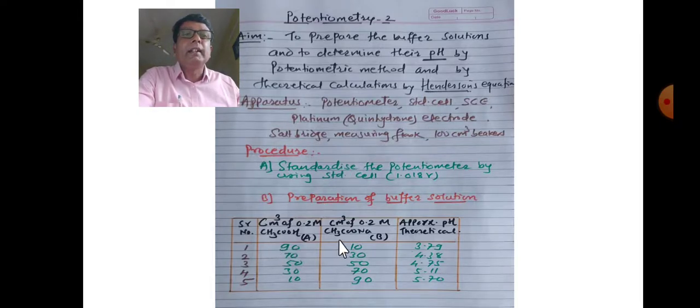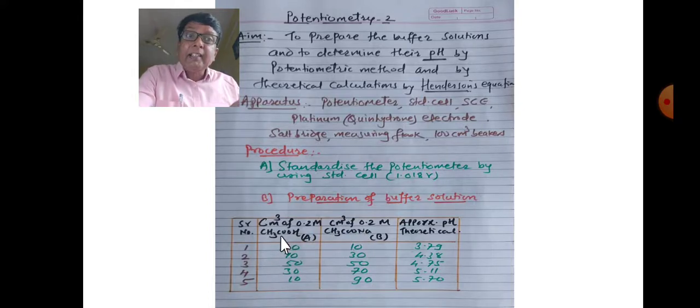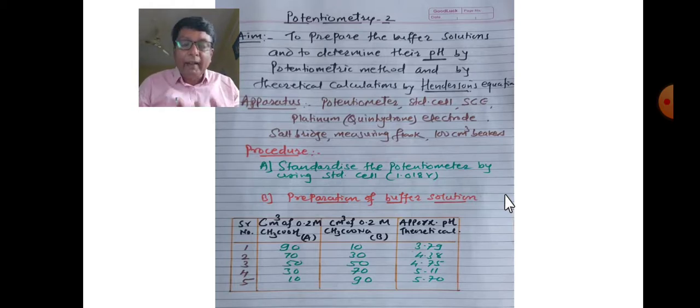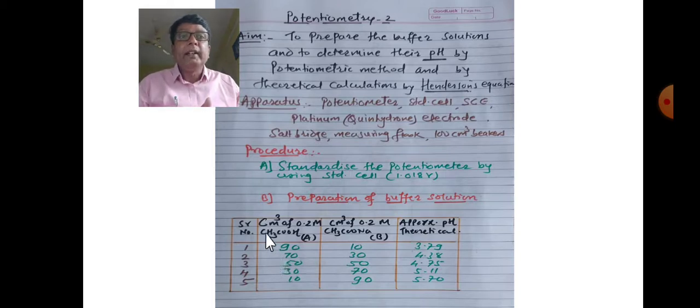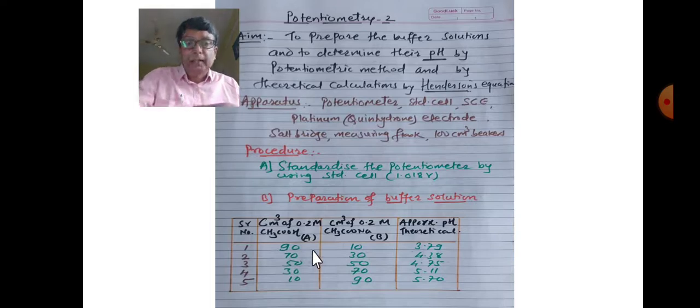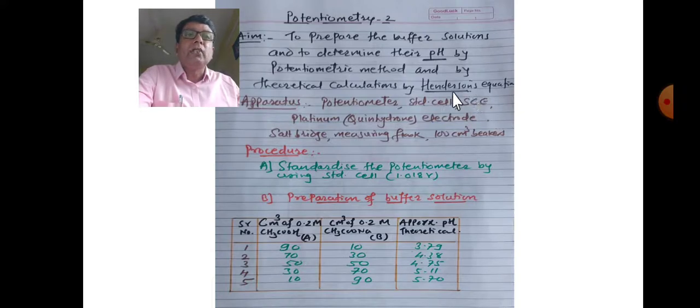Acidic buffer: weak acid CH3COOH and CH3COONa, which is salt of strong base. The reaction is CH3COOH weak acid plus NaOH strong base gives CH3COONa plus H2O. Apparatus: potentiometer, standard cell, saturated calomel electrode SCE, platinum quinhydrone electrode, salt bridge, and volumetric flasks. Chemicals: buffer solutions.